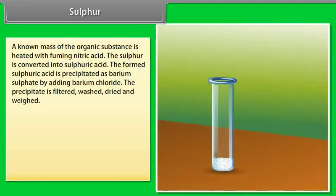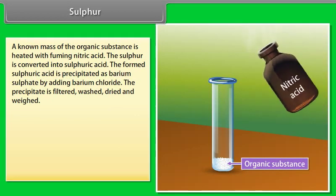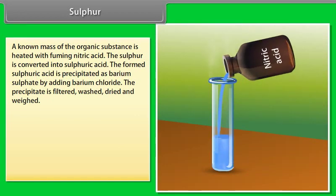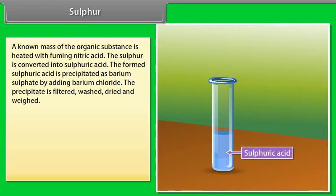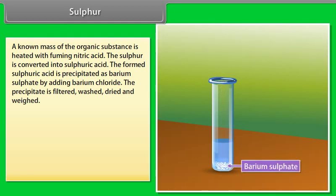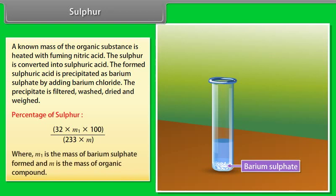Sulphur: a known mass of the organic substance is heated with fuming nitric acid; sulphur is converted into sulphuric acid. The formed sulphuric acid is precipitated as barium sulphate by adding barium chloride. The precipitate is filtered, washed, dried, and weighed. Percentage of sulphur = (32 × M₁ × 100) ÷ (233 × M), where M₁ is the mass of barium sulphate formed and M is the mass of organic compound.